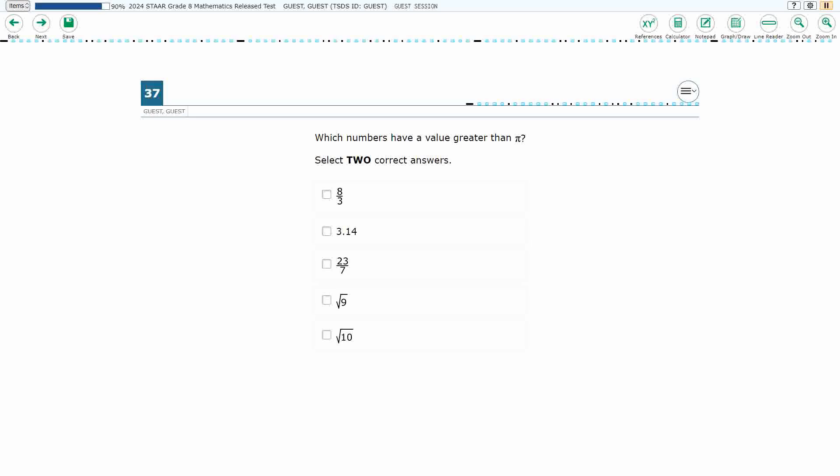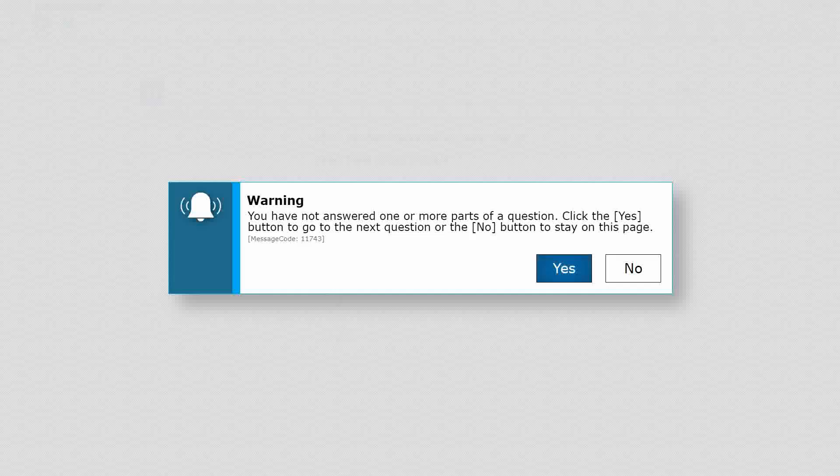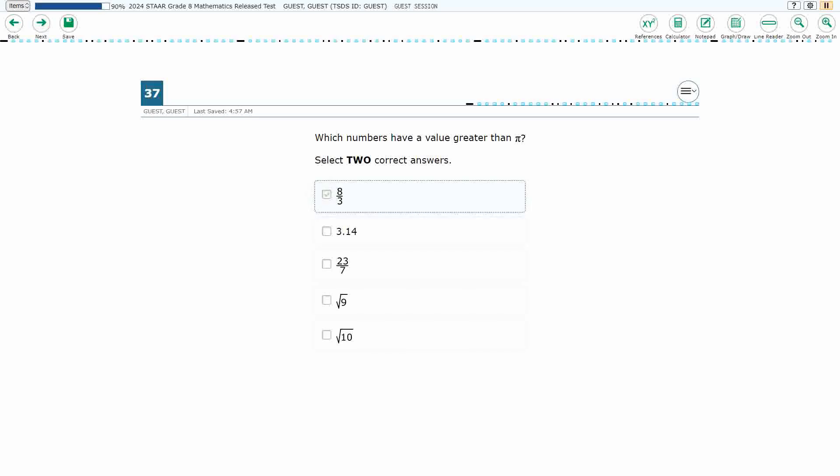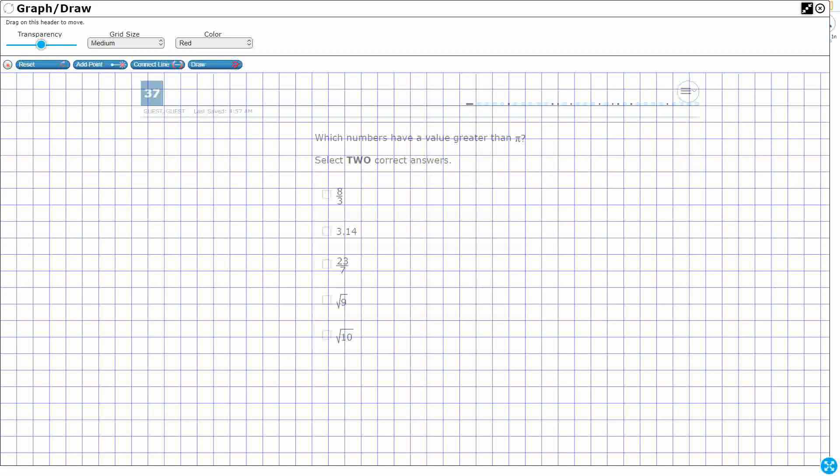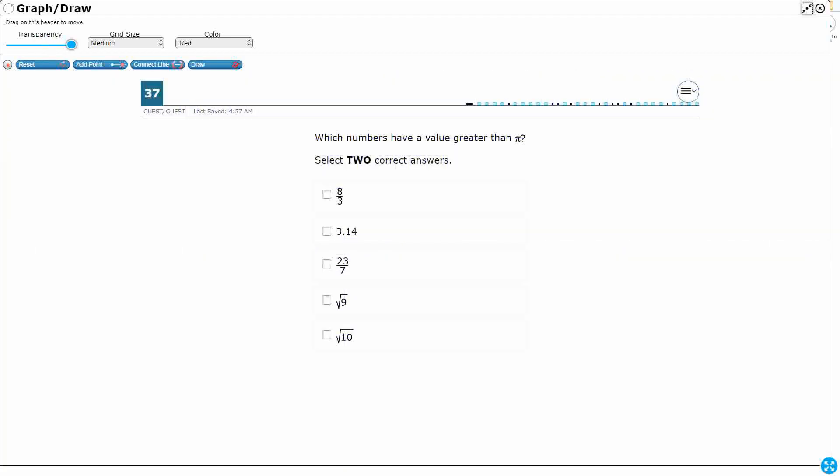All right, so we've got multiple selects here, so we need to select two correct answers. So to see if I select the first two randomly, I am unable to select a third. And if you select just one and try to move on, it will give you an error message. Two-point problem. Let's get full credit here, two points, which means we need to find two answers.